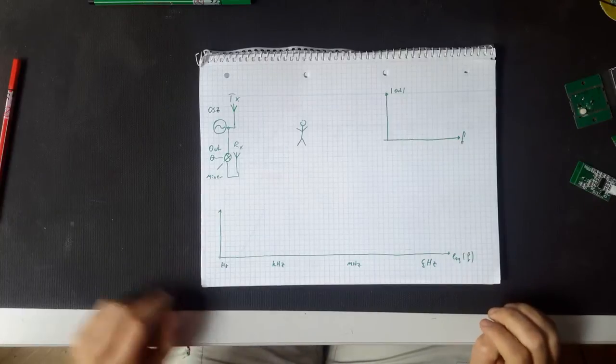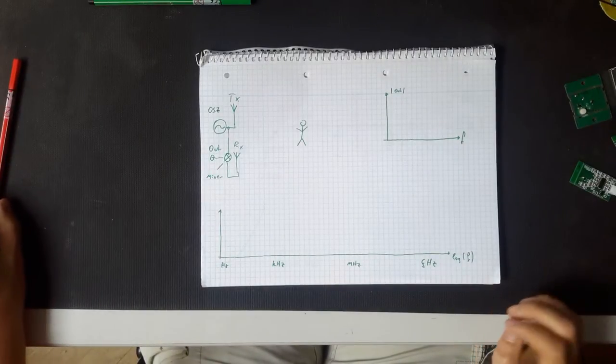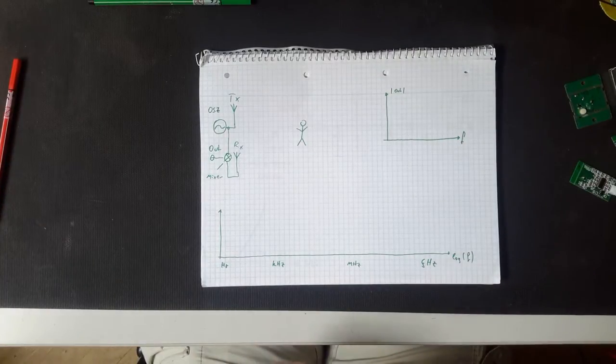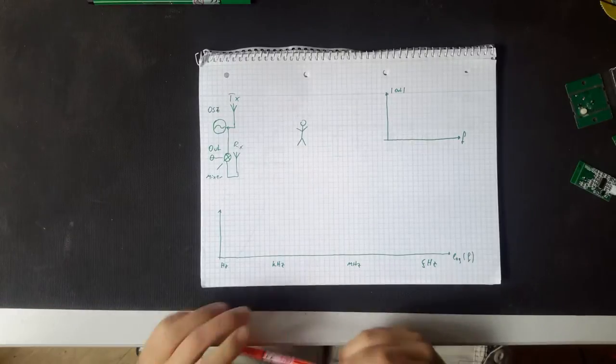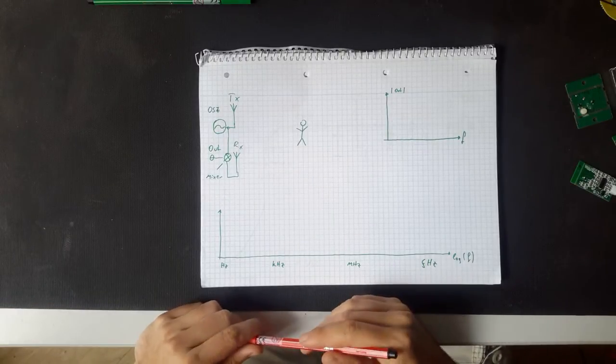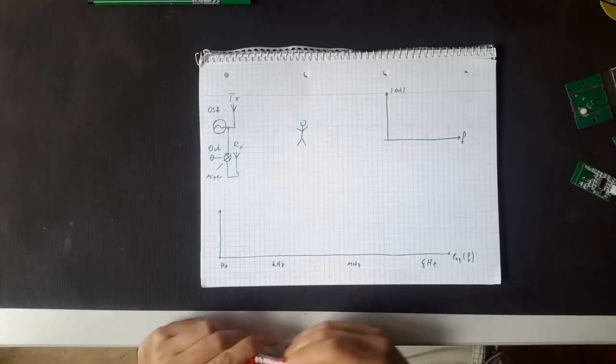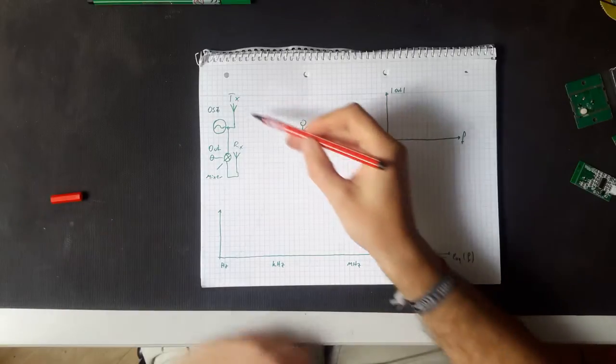I made up this sketch here and whenever you want to build a radar, especially a Doppler radar which is a very basic version of it, you need two things. First of all, you need an oscillator.